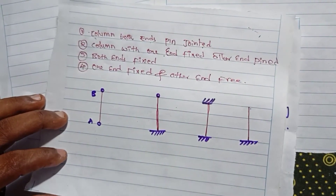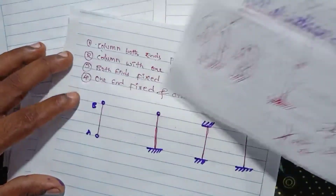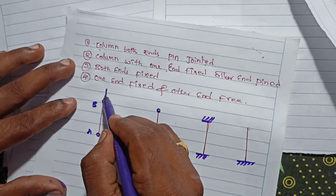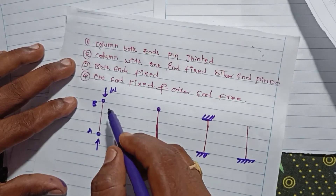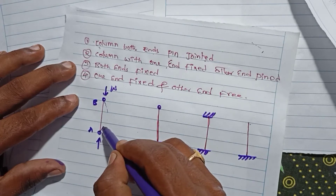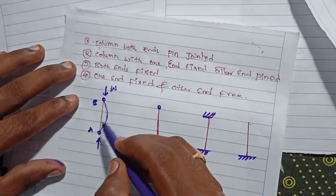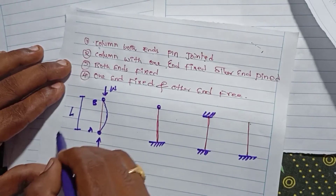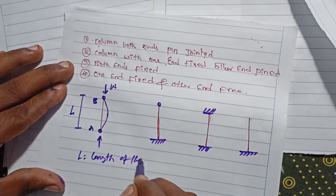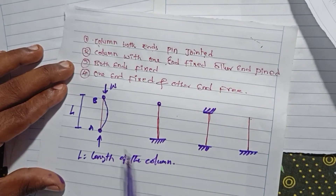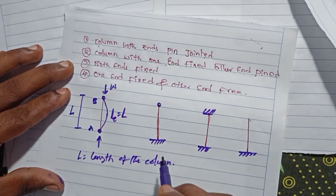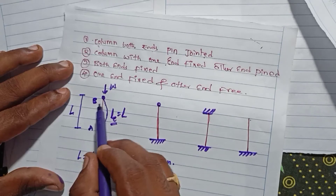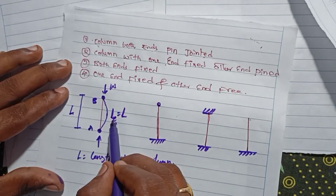Now, what is the effective length for each case? For both ends pin-jointed: both ends are free to rotate, so both ends are points of inflection. The capital L is the length of the column. The effective length Le is equal to L — the full length of the column.